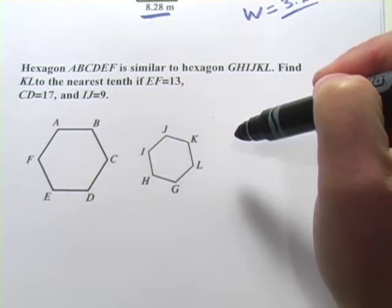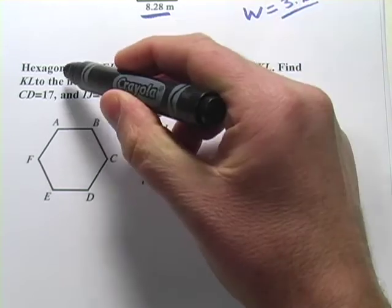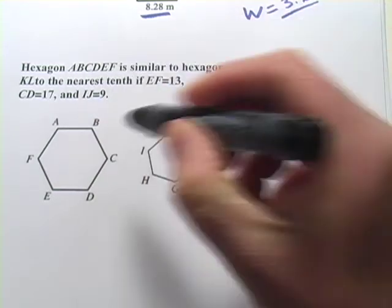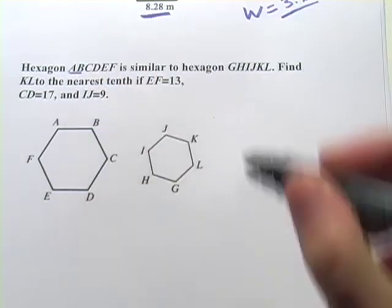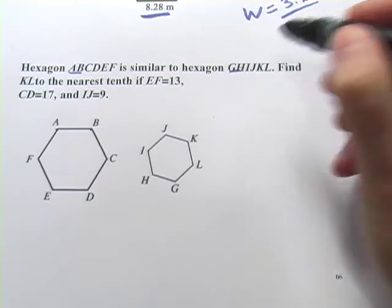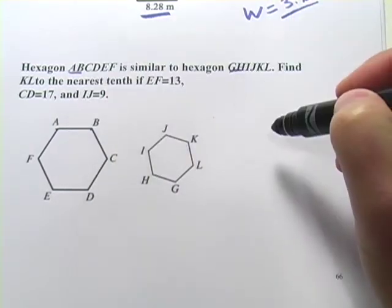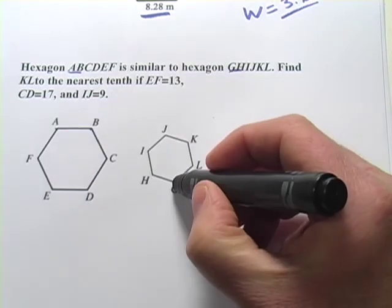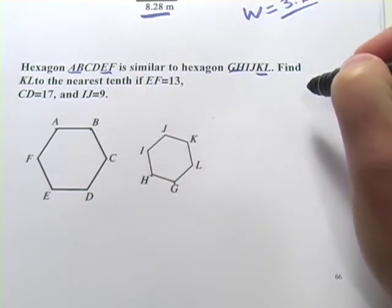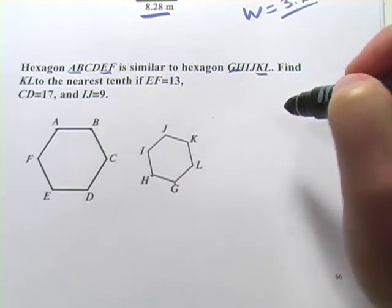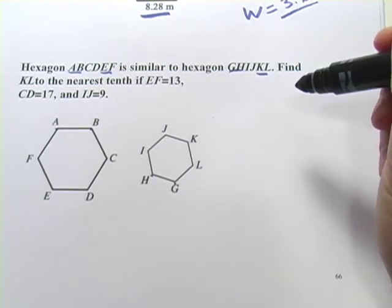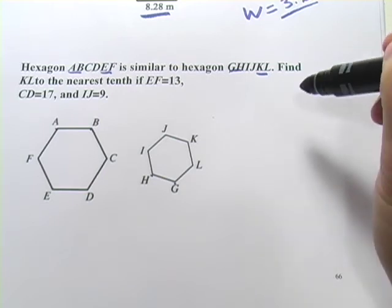The way to tell which side corresponds with another is actually in the list of the name of the hexagon here. So AB, that side, would correspond to GH. First two letters, first two letters. So AB corresponds to GH. EF would correspond to KL because those are the last two letters. So the position of the letters in the name of the figure will help you decide which sides are corresponding to each other.